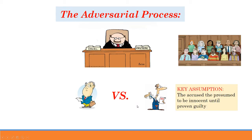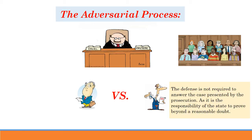The key assumption here is that the accused is presumed to be innocent until proven guilty. So the defense is not really required to put on any kind of case — his only job is to cast a reasonable doubt. In most cases, the defendant will have to create an affirmative defense and show that his defendant did not do something, but that's very rare. In most cases, his job is rather simple: cast doubt, cast a reasonable doubt.